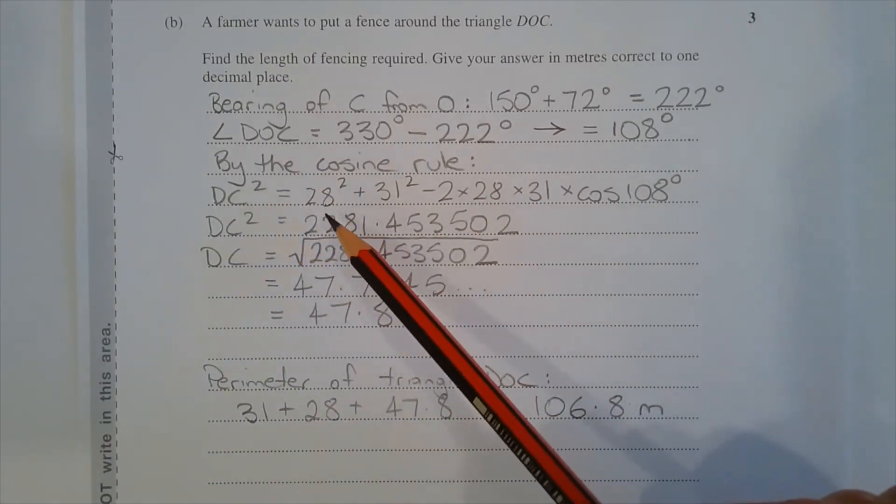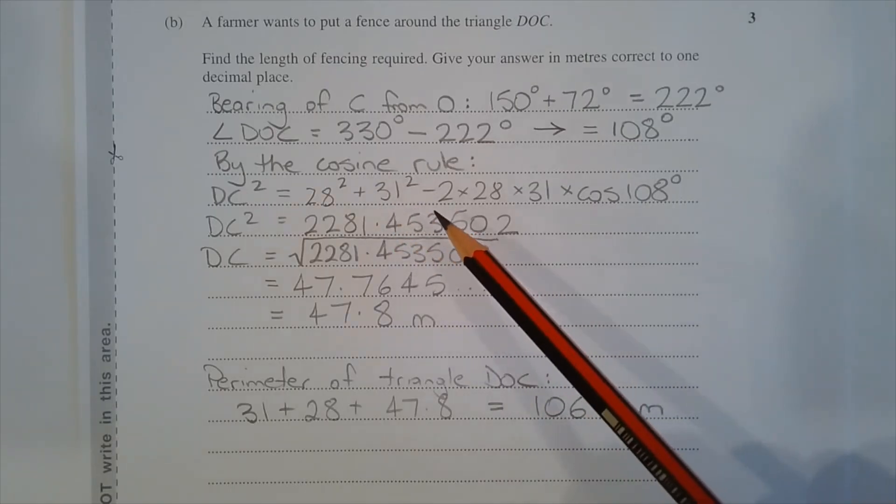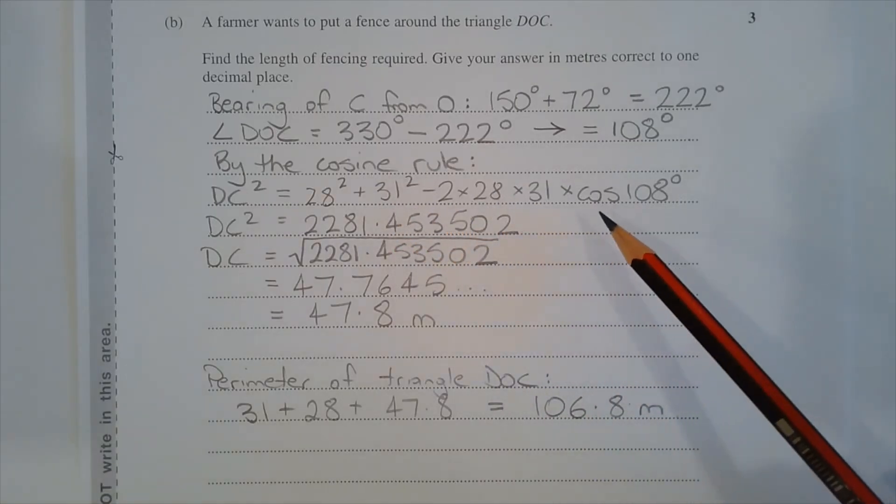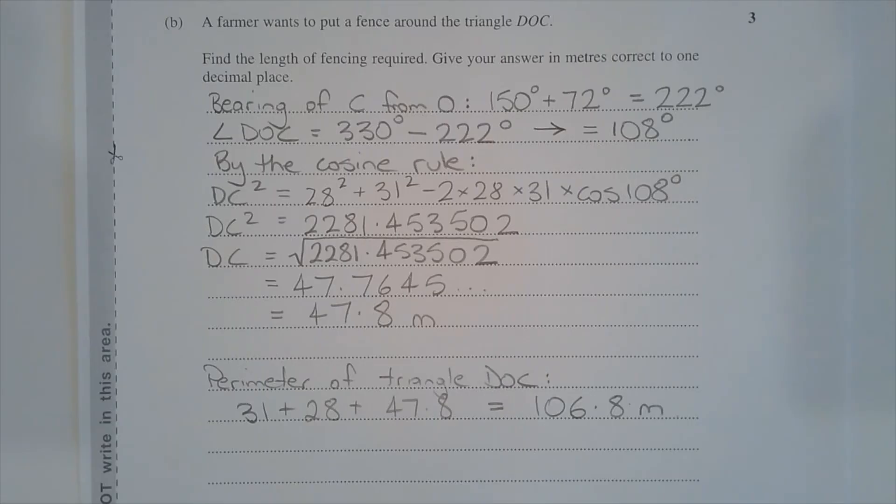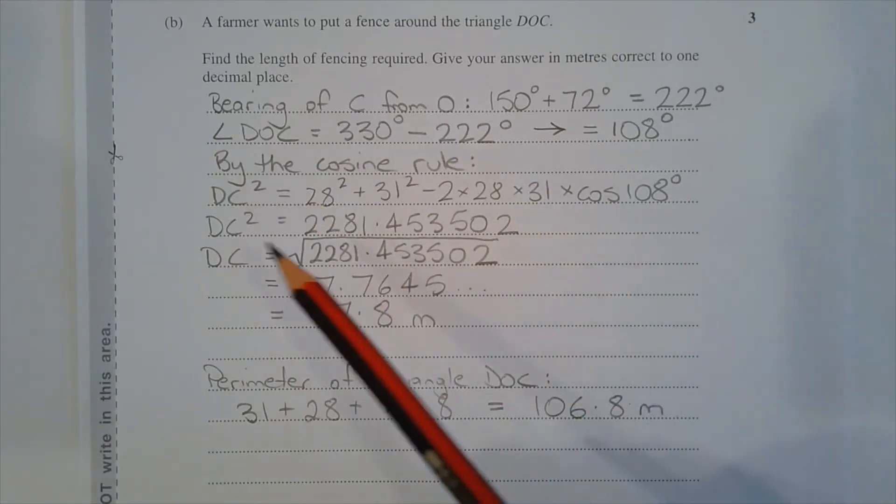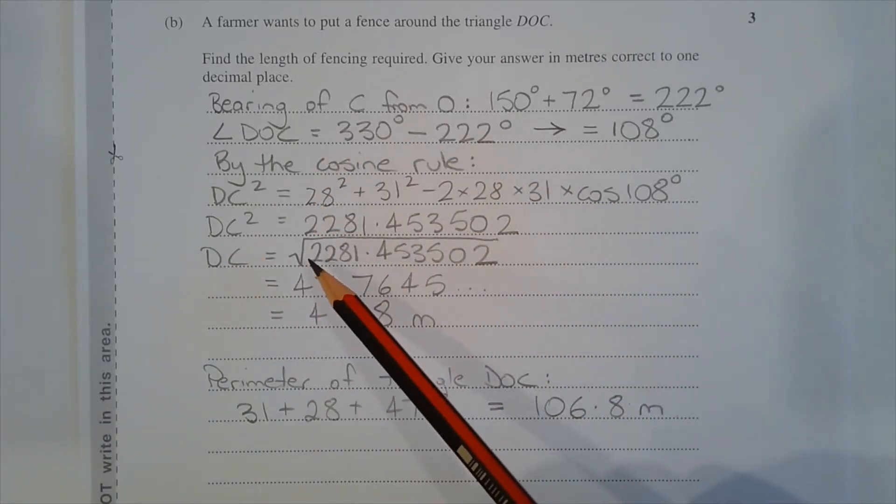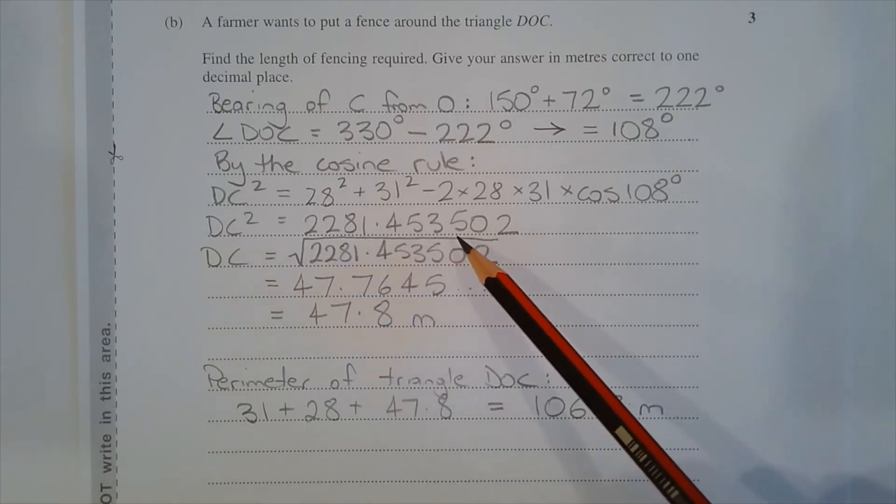So by the cosine rule, DC squared is equal to 28 squared plus 31 squared minus 2 times 28 times 31 times cos of 108 degrees. Evaluating the right hand side, we get DC squared is equal to 2281.453502.